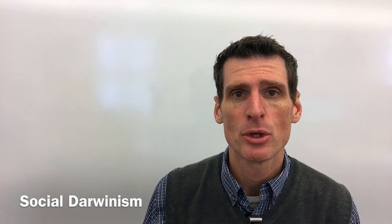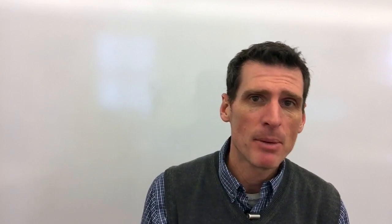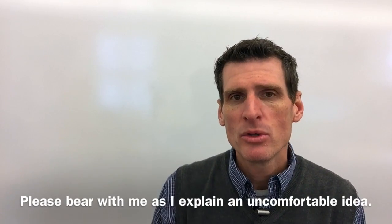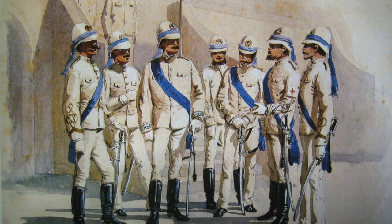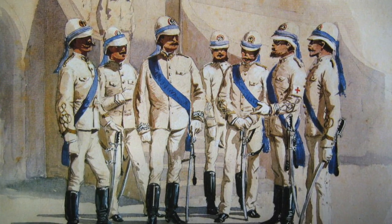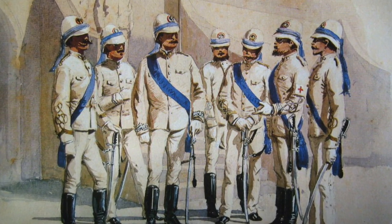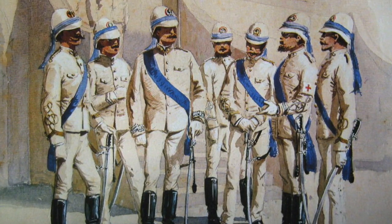A man named Herbert Spencer decided to apply Darwin's ideas of survival of the fittest to human societies. He came up with this theory: those societies which were more fit to survive would advance farther than societies that did not. For more advanced societies to take over or attack societies that were less fit to survive was okay in his eyes — because that was the natural way of things.